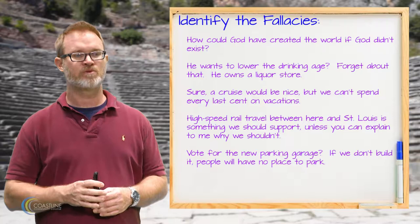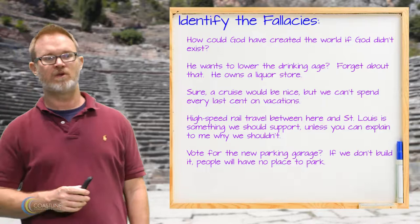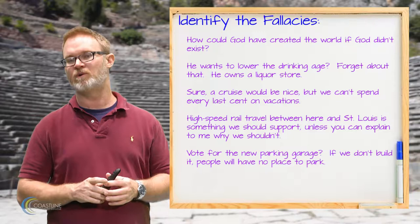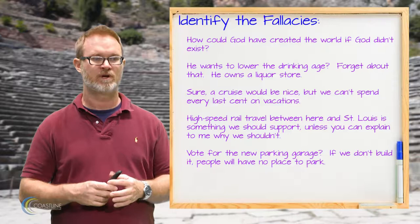The next one says: high-speed rail travel between here and St. Louis is something we should support, unless you can explain to me why we shouldn't. That phrase at the end — unless you can explain to me why we shouldn't — is a kind of misplacing the burden of proof mistake, trying to shift the burden back on the other side without any reason for doing so.